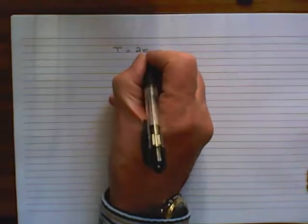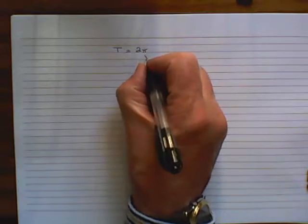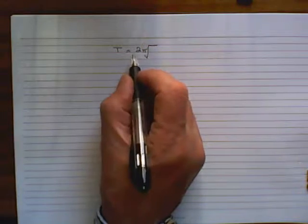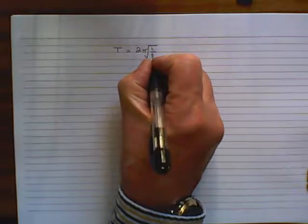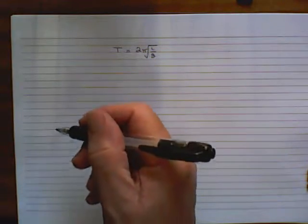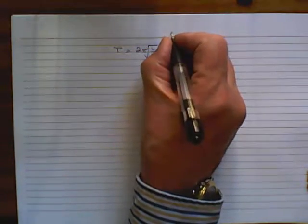T equals 2π, the square root of L over G. It's a fairly common one, and what we want to do is to make G the new subject.